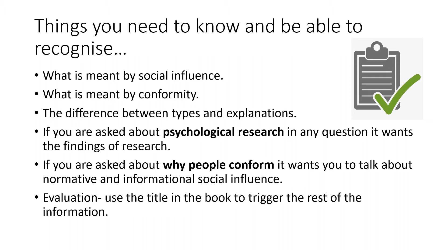Also the next point was something that actually tricked a lot of students in an exam question. So if you're asked about why people conform, it wants you to talk about normative and informational social influence, not the main studies like Zimbardo, Asch and Milgram — that is not what it's looking for. Plus, Milgram is talking about obedience, so we don't want that at all. It's conformity and why, and these two different explanations which we will go into.